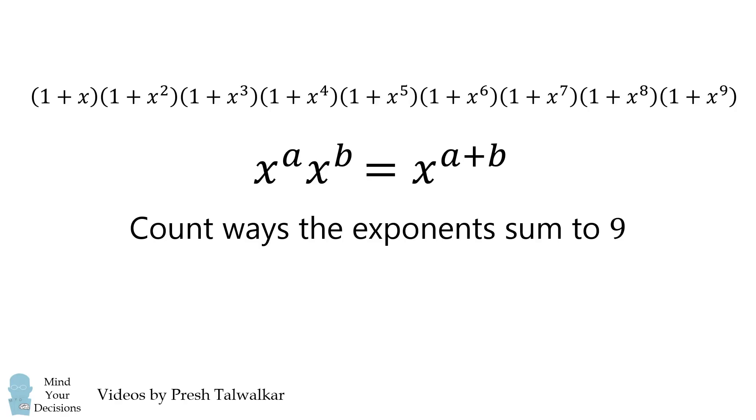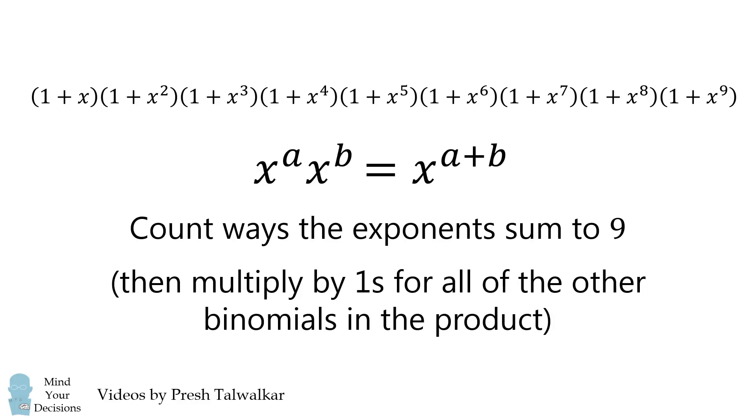We're therefore going to count the ways that the exponents sum to 9. And the exponents are the numbers from 1 to 9. We'll then multiply the result by 1's from all of the other binomials in the product.